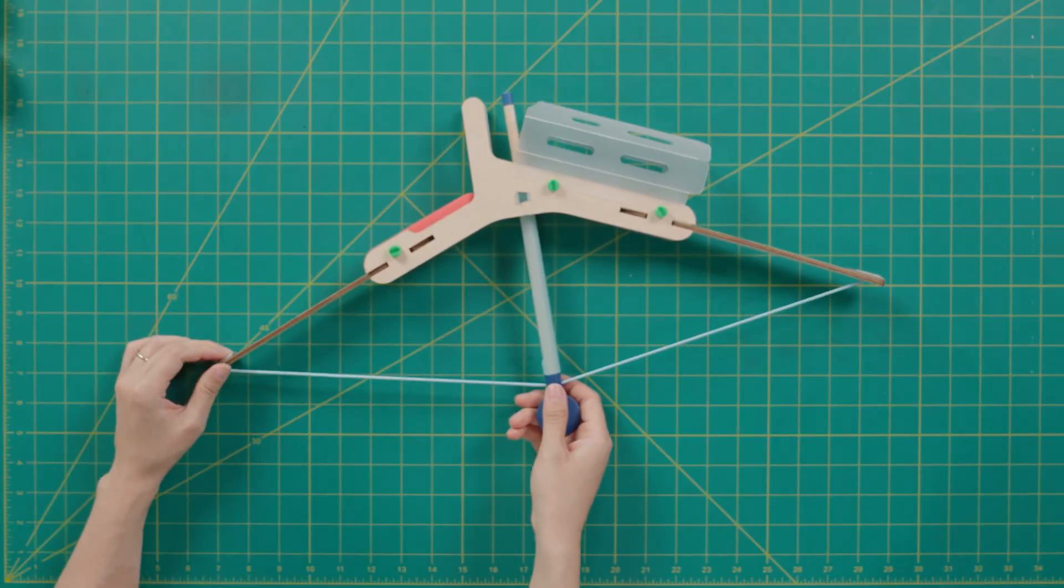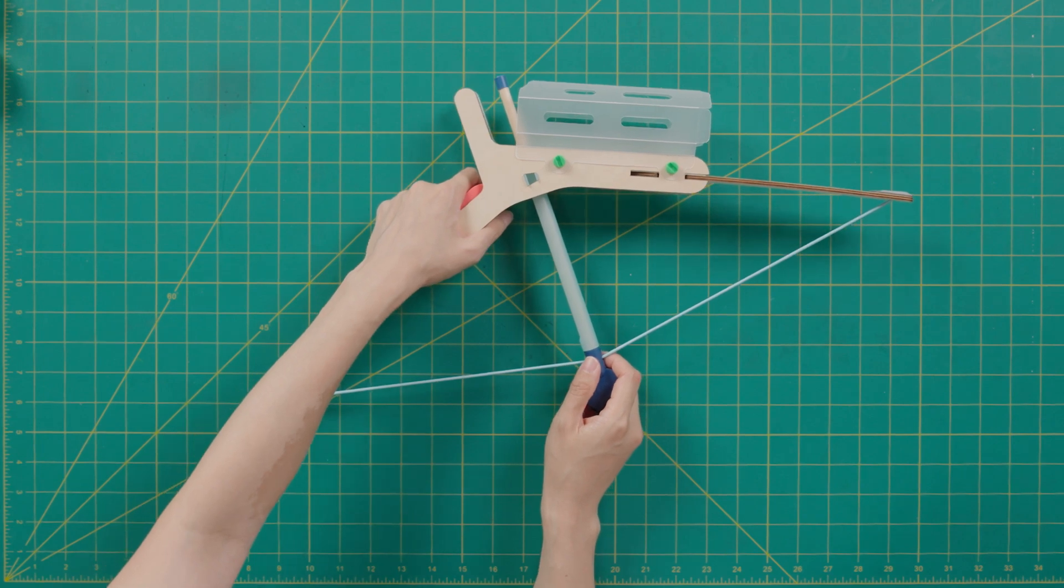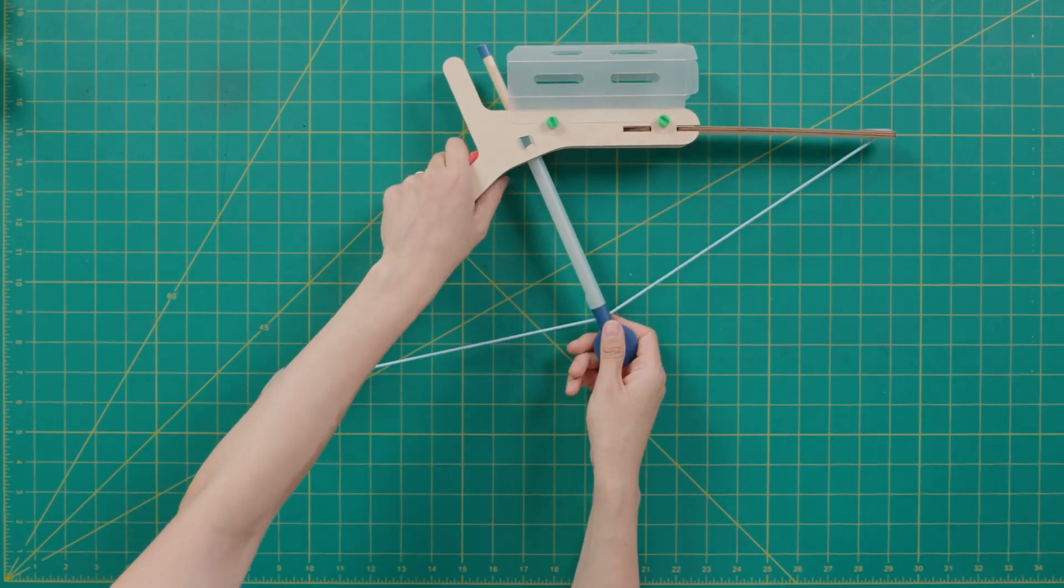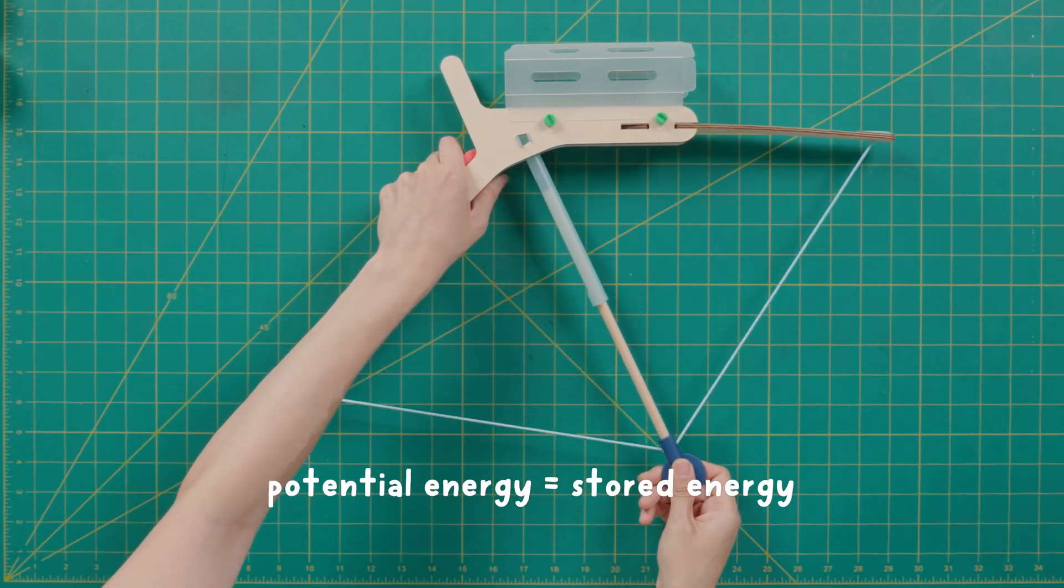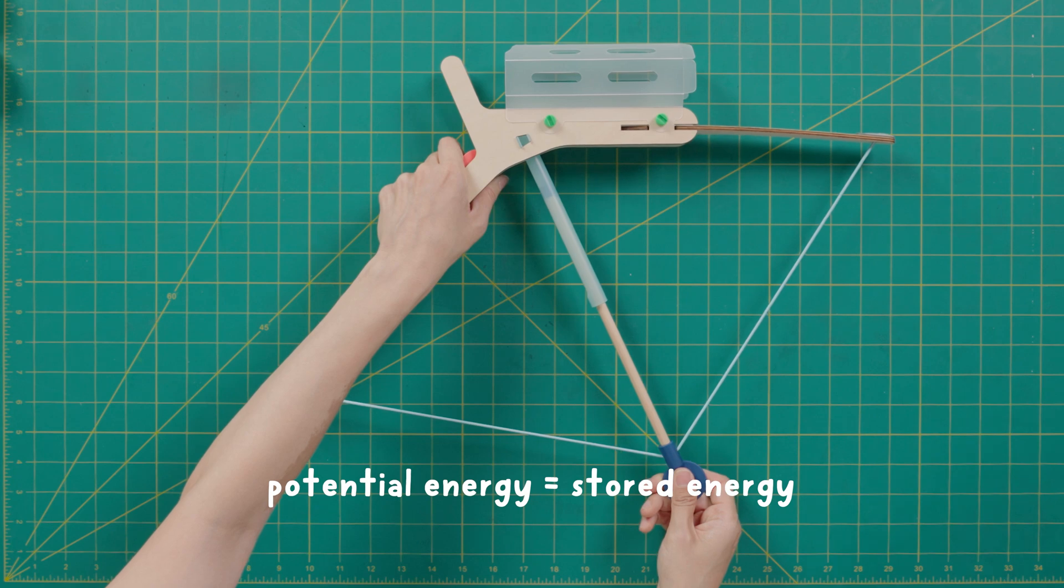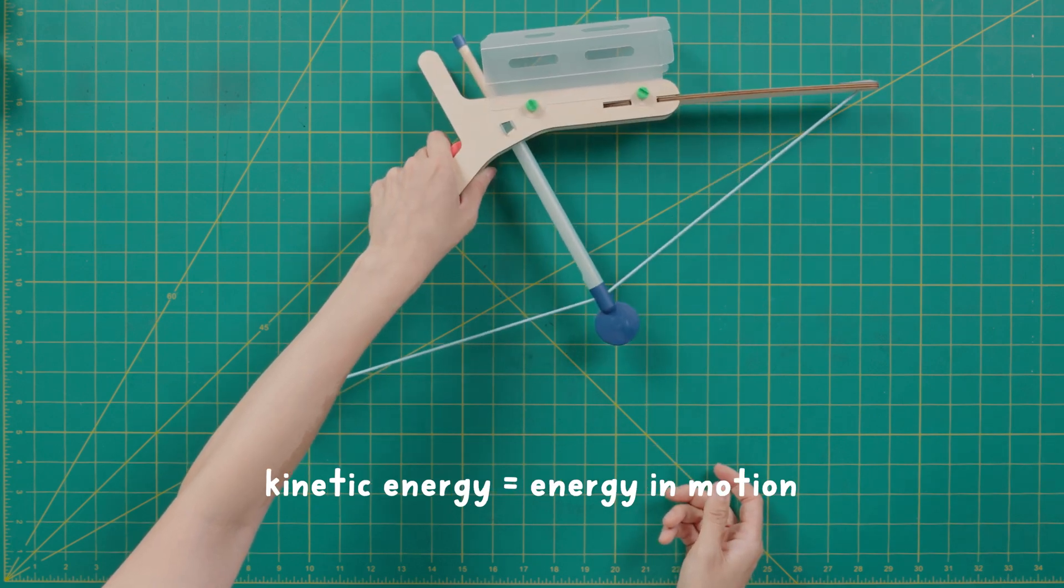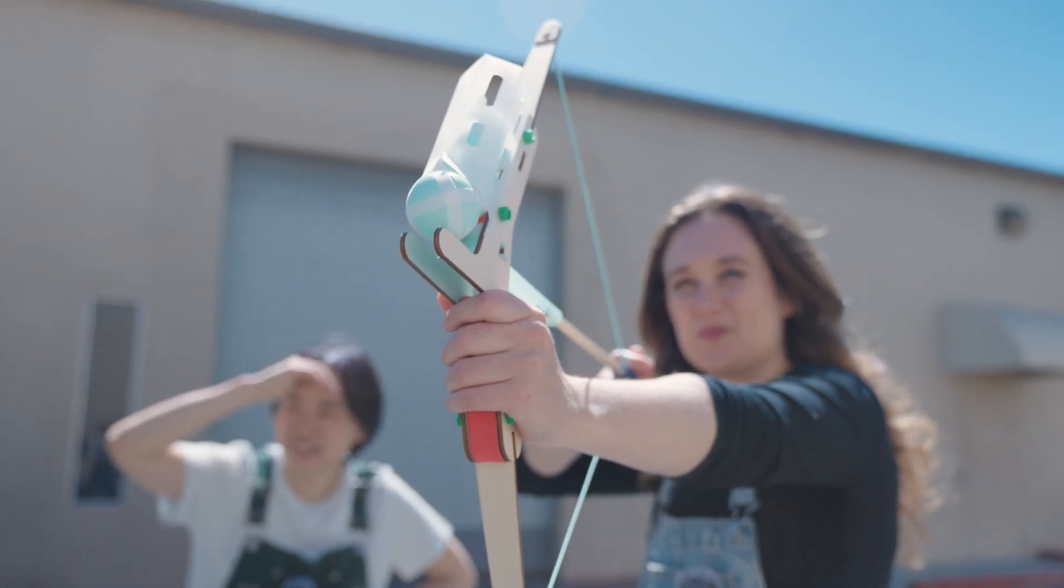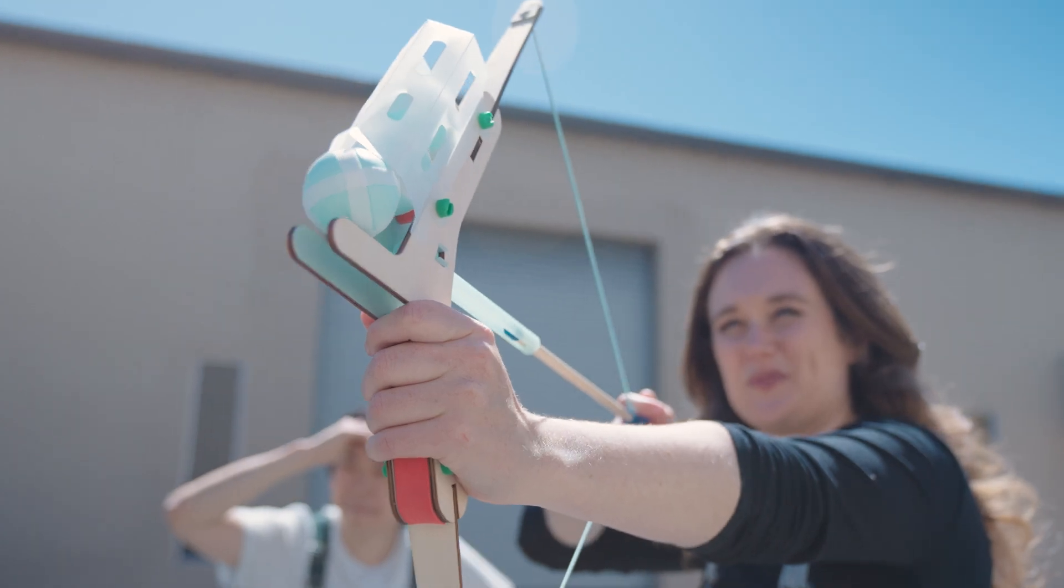Want to know something cool about strings? Yes. The string is where your bow's launching power comes from. When you stretch it back, you're putting energy into the string. When you let go, the string snaps forward as you release the energy. The energy pushes the arrow rod, which fires the ball.